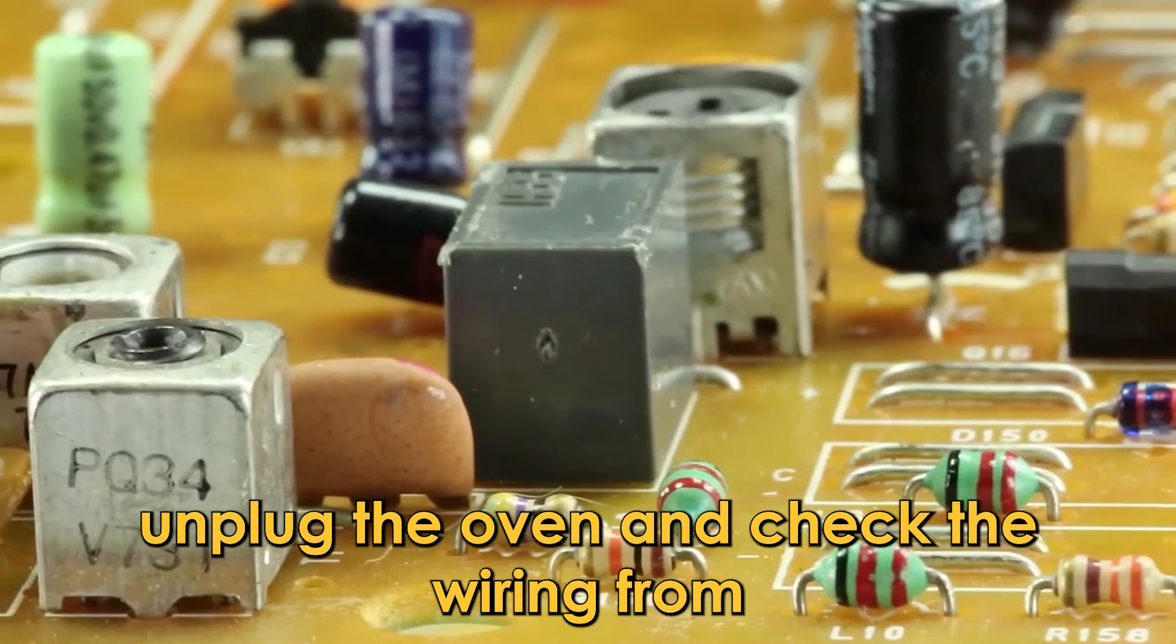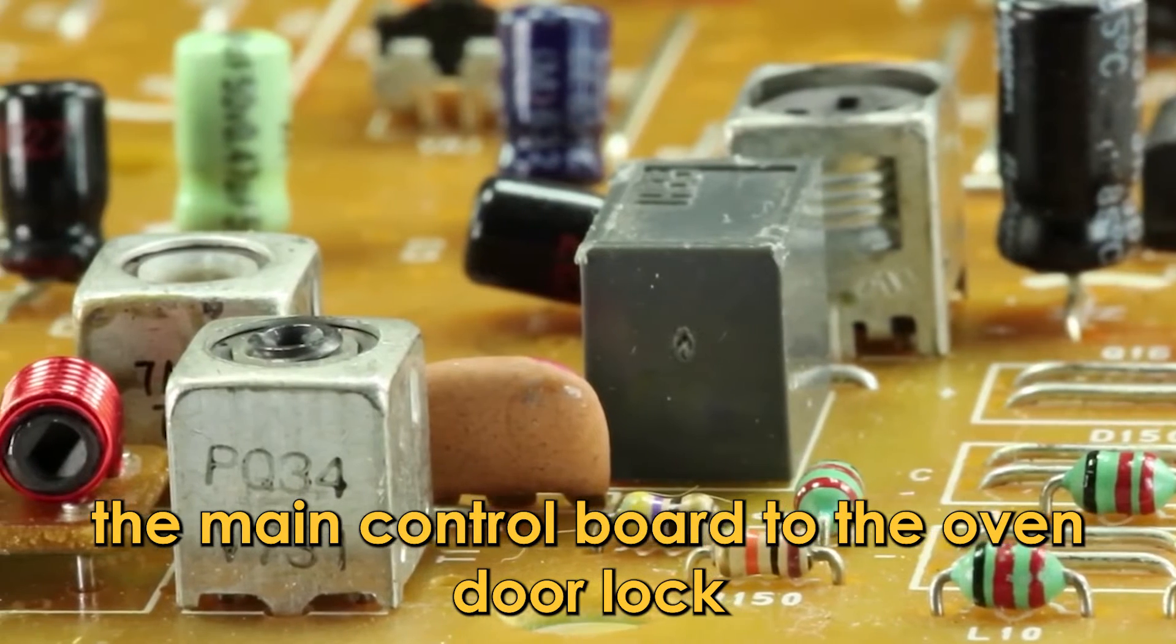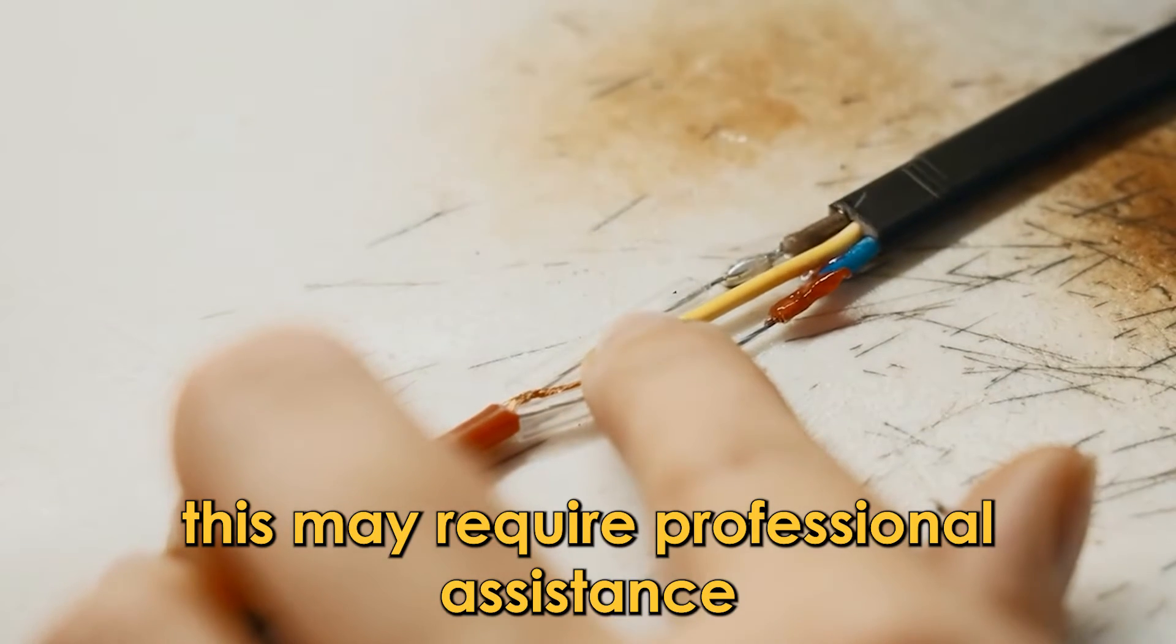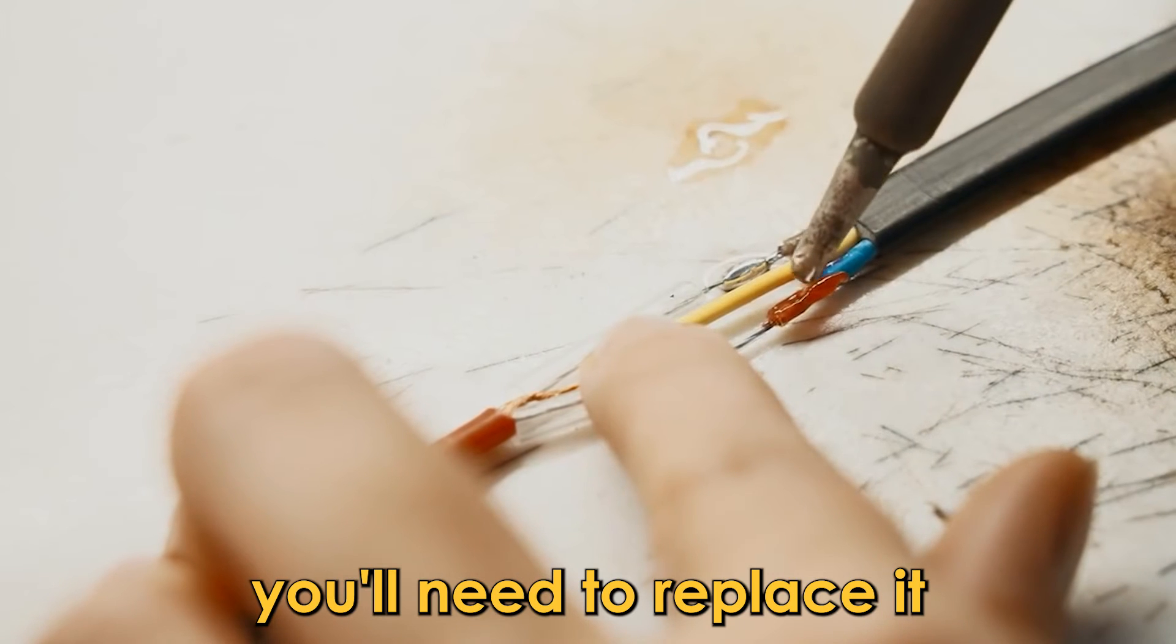Or, check the internal wire connection. Unplug the oven and check the wiring from the main control board to the oven door lock. This may require professional assistance. If the wiring is faulty, you'll need to replace it.